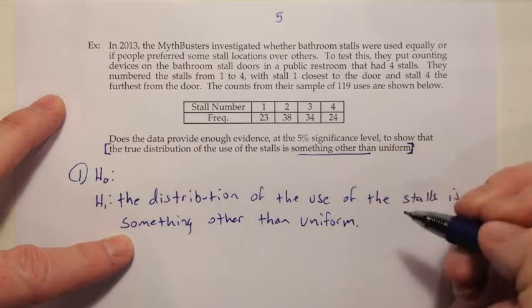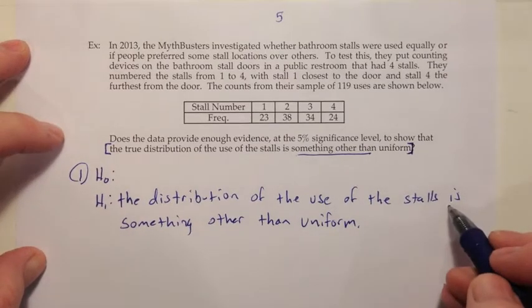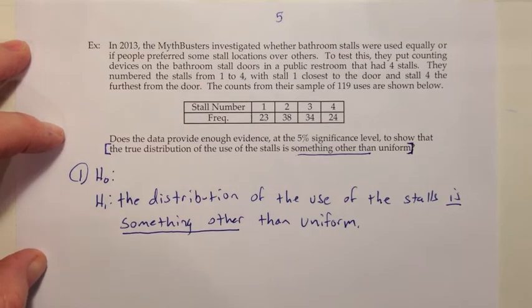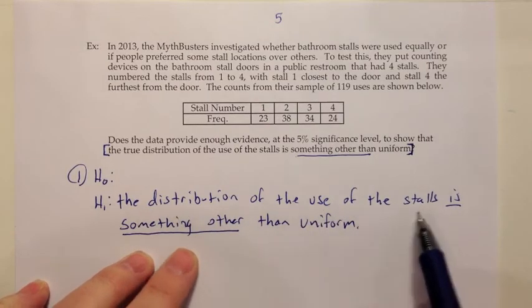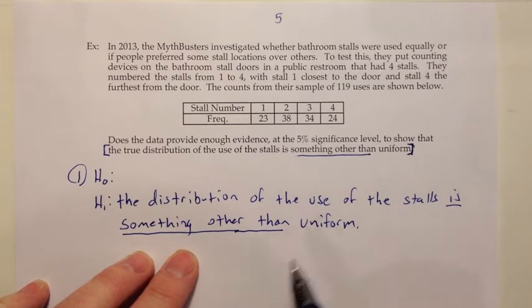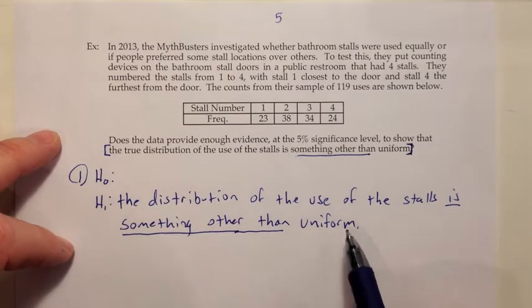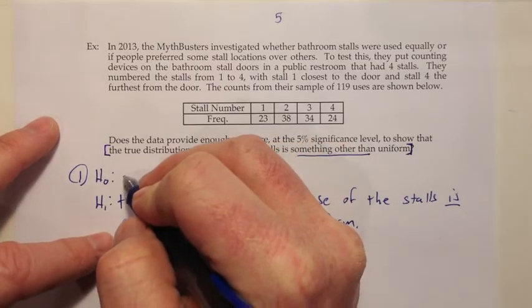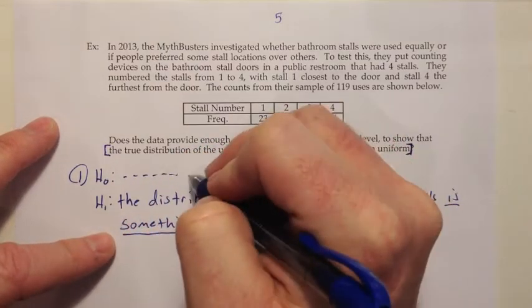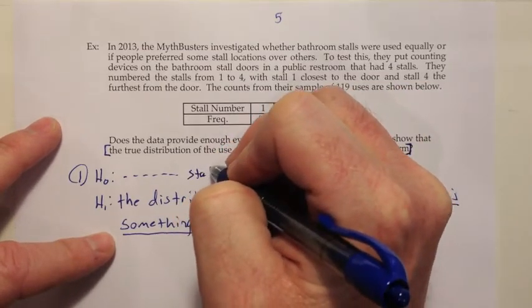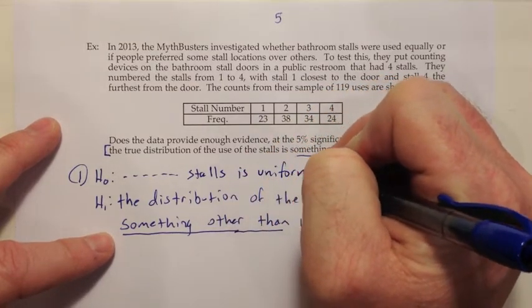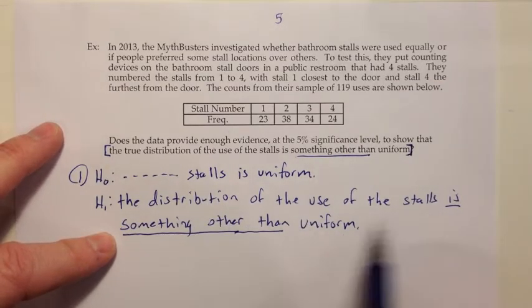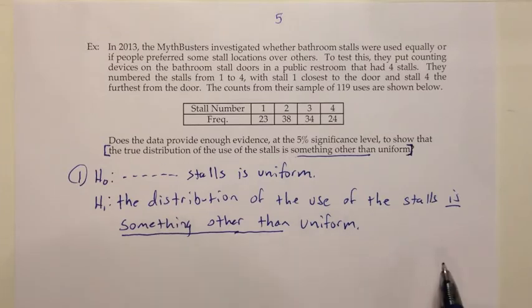Now when I go to write H0, I want to take that part is something other, which sounds like is different from, and I want to substitute the idea of equality there. So I think it would be good if I said the distribution of the use of the stalls is uniform. So as long as you write one of these out for me completely, I don't mind if you do the dot dot dot on part of the other one to shorten it up a little bit.